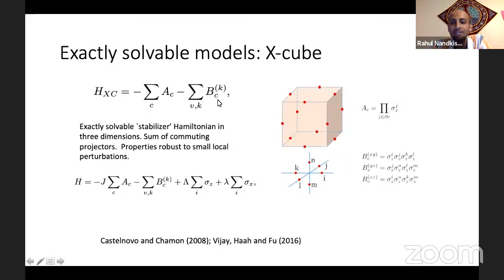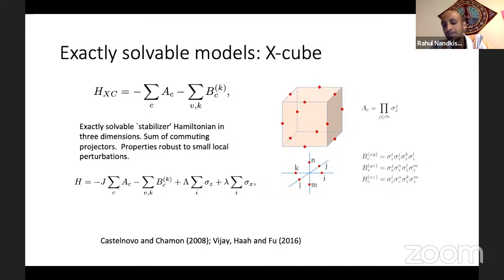The X-cube is a model which describes spin-half variables living on the links of a cubic lattice. It's a stabilizer code, meaning it contains two sorts of terms — the A's and the B's — and all the terms commute with each other. The A involves a product of X operators on all of the links that frame an elementary cube. Whereas the B says: you pick a vertex and you pick a plane, which defines four links connecting to that vertex in that plane, and you take the product of Z's around those four links.